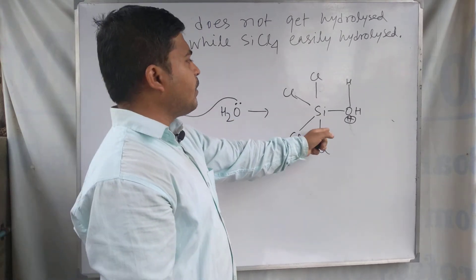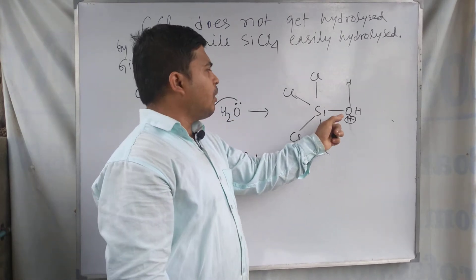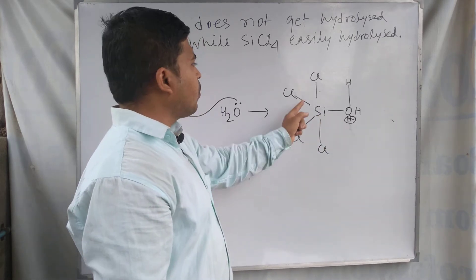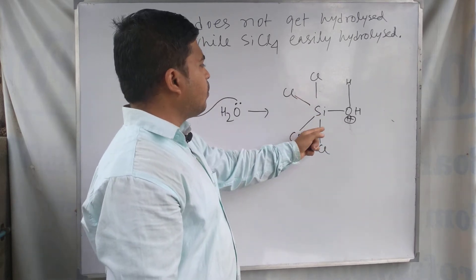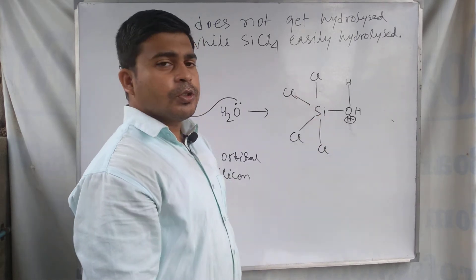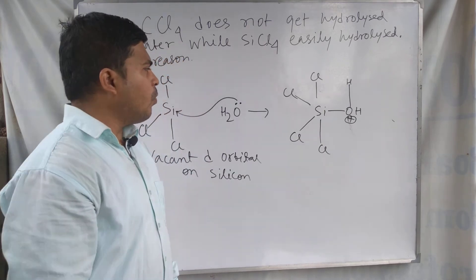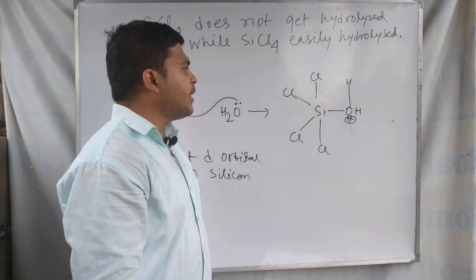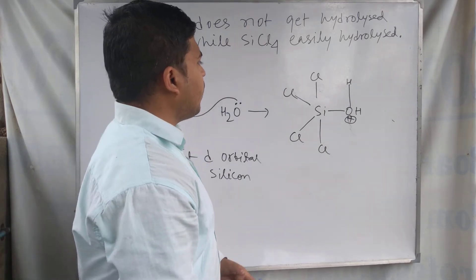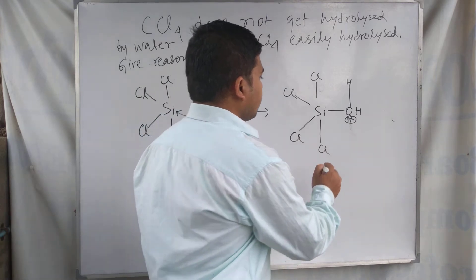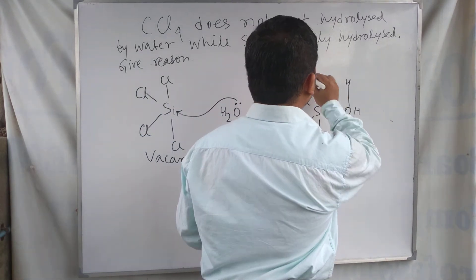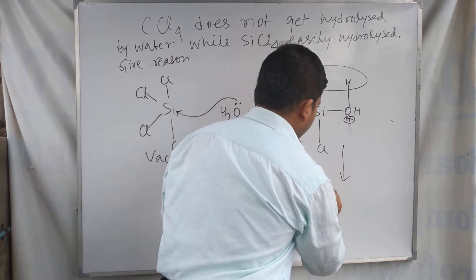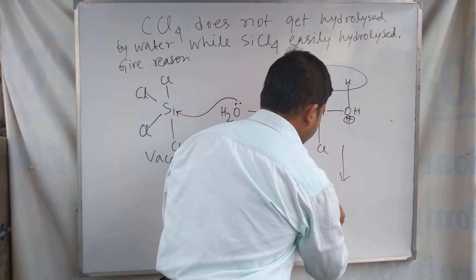In this case, the valency of the silicon compound becomes 5 — that is 1, 2, 3, 4, 5. So in the first step, water molecule attack and valency extension occur, and after that in the second step, the HCl molecule is removed from silicon.